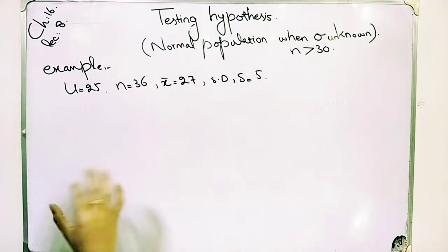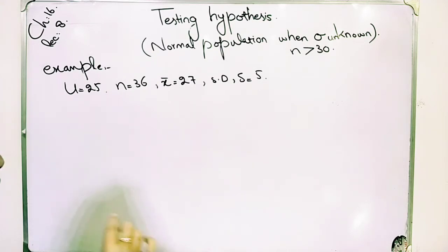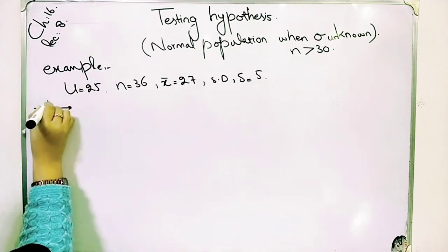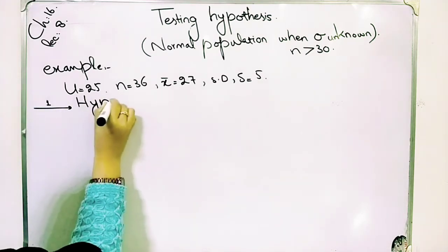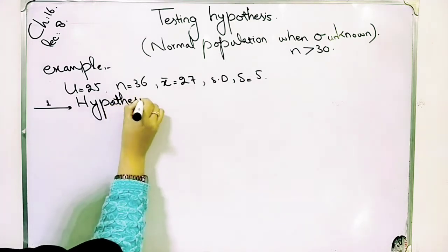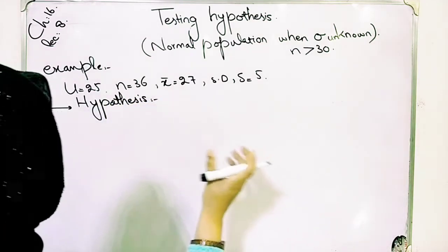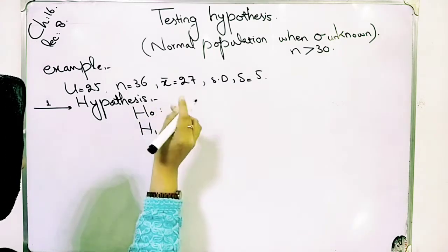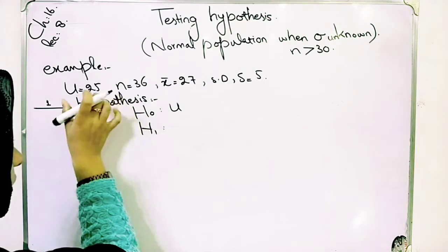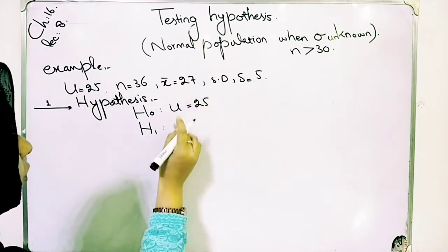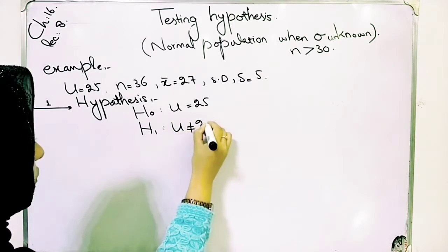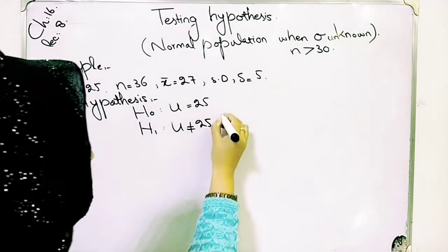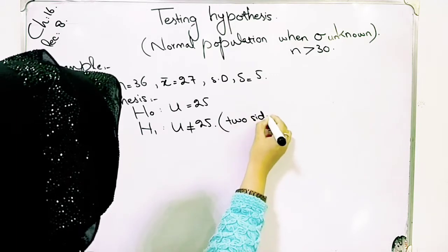The only change is in the formula we use — otherwise we follow the same 6 steps. Step 1: State the hypothesis. We have the null hypothesis H₀: μ = 25 and the alternative hypothesis H₁: μ ≠ 25. This is a two-sided test.